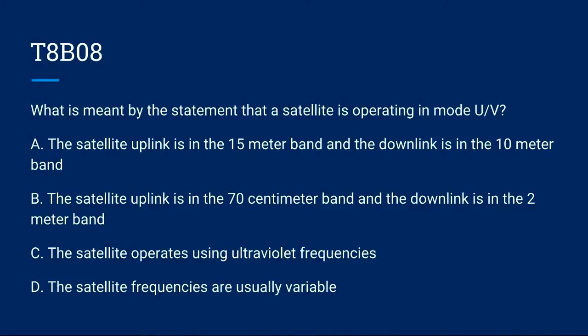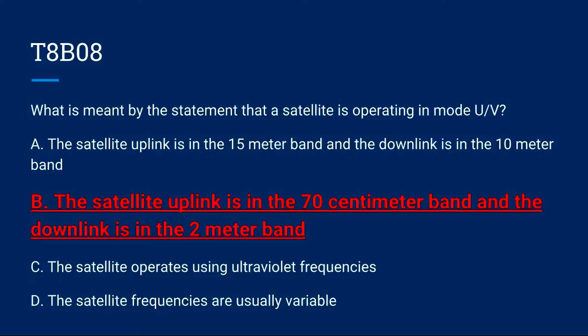T8B08: What is meant by the statement that a satellite is operating in mode U-V? A. The satellite uplink is in the 15 meter band and the downlink is in the 10 meter band. B. The satellite uplink is in the 70 centimeter band and the downlink is in the 2 meter band. C. The satellite operates using ultraviolet frequencies. Or D. The satellite frequencies are usually variable. The correct answer is B.